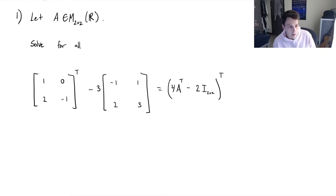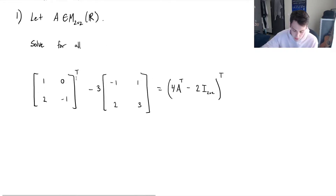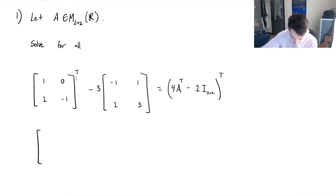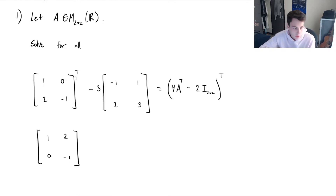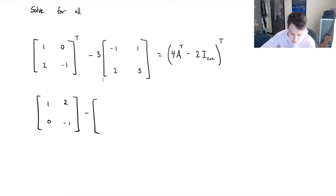It's asking us to solve the following equation — solve for all A that satisfies this equation. So for this, we're first going to simplify as much as we can in terms of the transpose of the matrix. We can rewrite that as taking the transpose: our diagonal entries will be the same, and then the other entries will be switched.